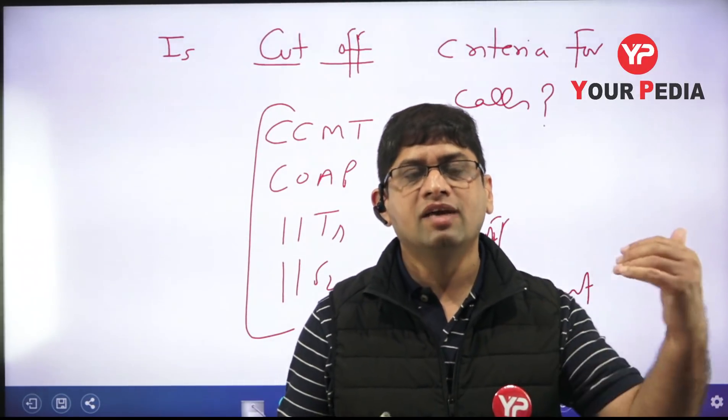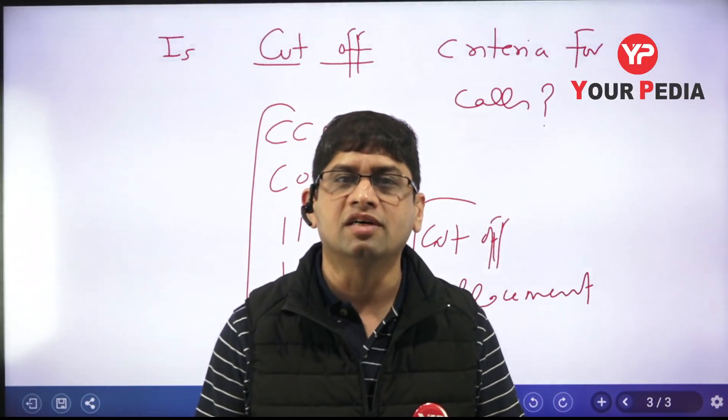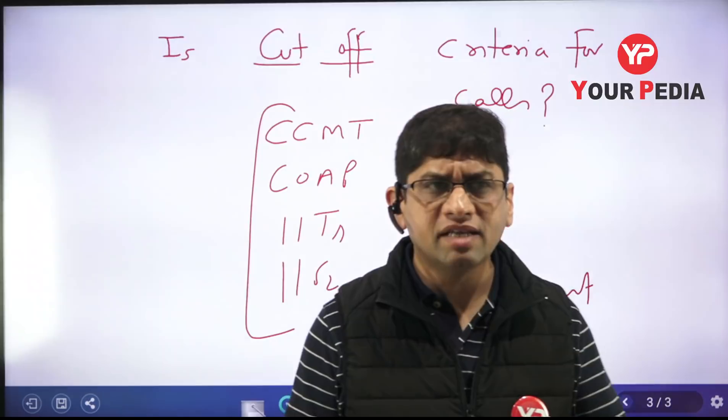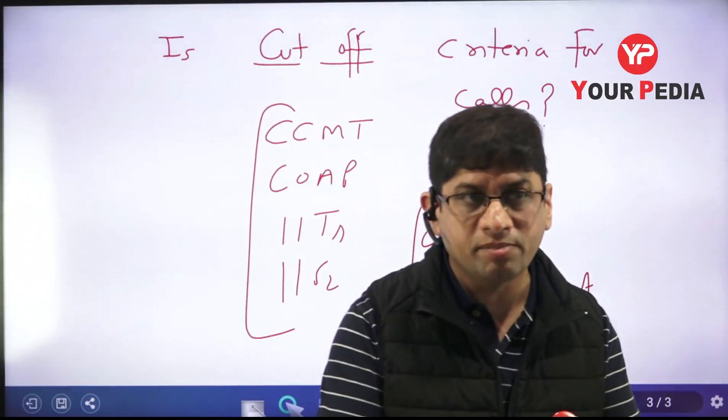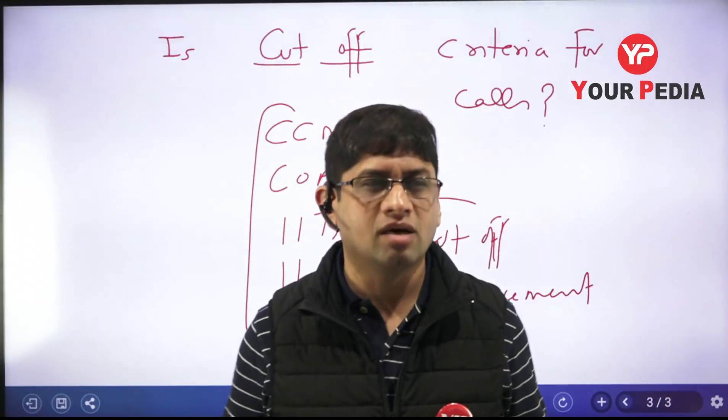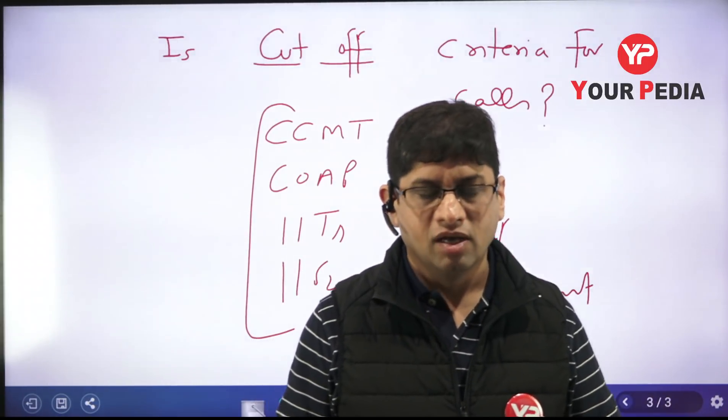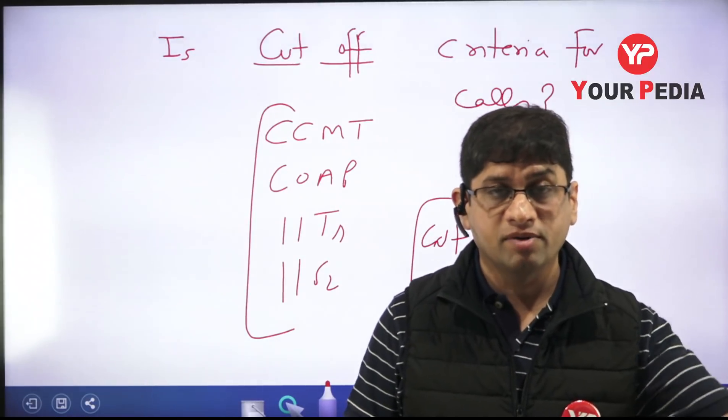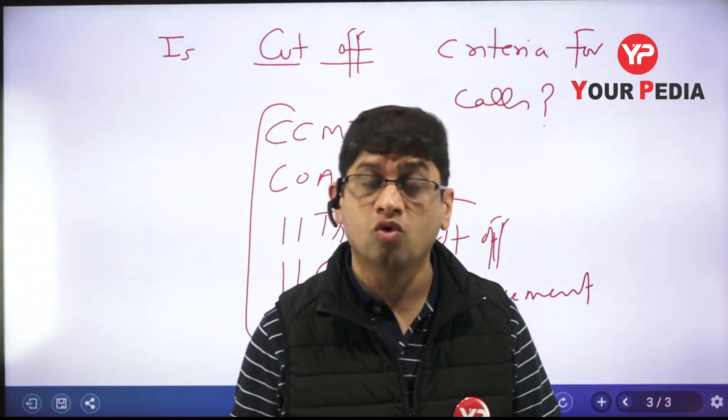First thing is cutoff is normally given for M.Tech, not MS and PhD. For PhD and MS, there's no data because the criteria is B.Tech score, academic background, research aptitude, interview, and written exam. They consider GATE as only a qualifying character. If some student has a very high CGPA, 9 plus, and GATE is qualified with a good research proposal, they get a call.